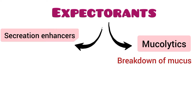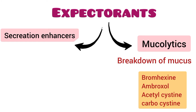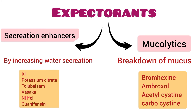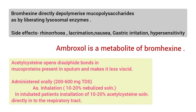Mucolytics act by breaking down mucus — they hydrolyze the mucoprotein. Secretion enhancers help to increase mucus secretion and assist in its clearance. One example of a mucolytic is bromhexin, which depolymerizes mucopolysaccharides.